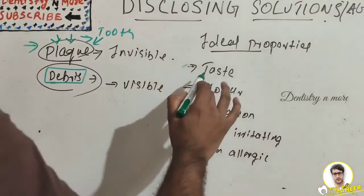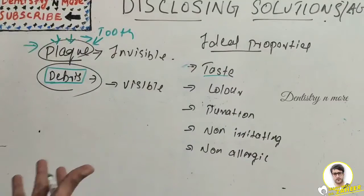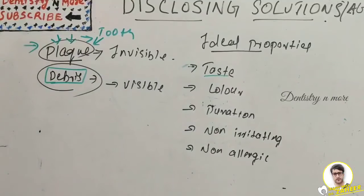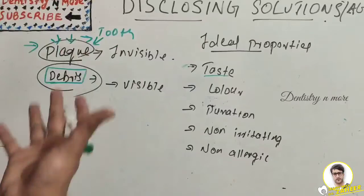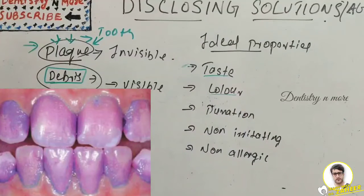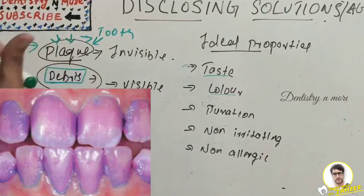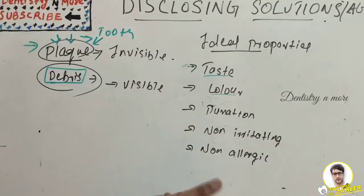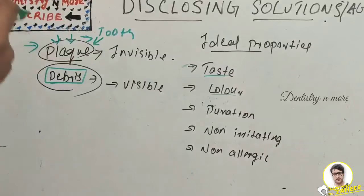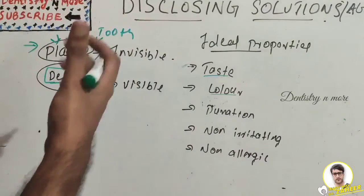What are the ideal properties of a disclosing solution? First, it should have a good taste and flavor to increase patient cooperation. Second, the intensity of color should provide evident contrast to differentiate the plaque from the surrounding environment. Third, the duration of intensity — the retentive power — meaning the color should not rinse off easily with simple water rinsing; it should stick to the plaque for a time period. It should not be irritating to the mucosa, should not be allergic, and should have some antiseptic properties.